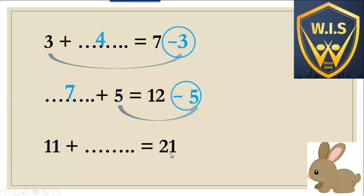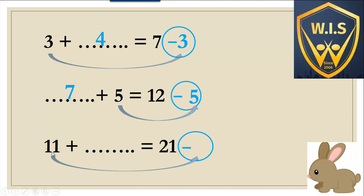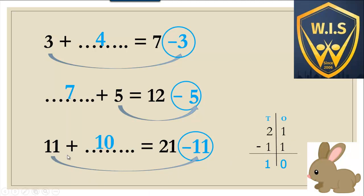Another example: eleven plus what equals twenty-one. We make a circle and write minus. Take the addend eleven to the circle, so it becomes twenty-one minus eleven. It's a two-digit number, so we need to make a graph. Solve ones: one minus one equals zero. Solve tens: two minus one equals one. So the result is ten. Eleven plus ten equals twenty-one.